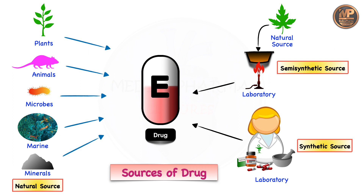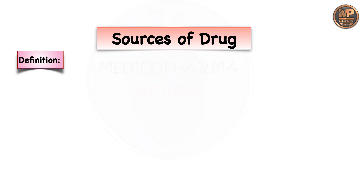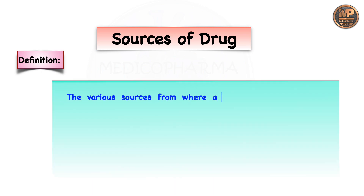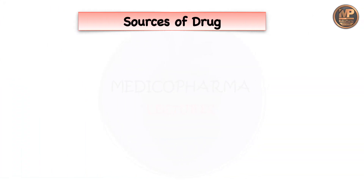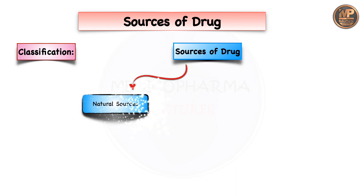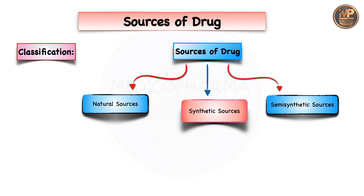These are all called sources of drug. If anything is missing, please mention it in the comment section. The various sources from where a drug can be obtained are collectively called sources of drug. The first class is natural sources obtained from nature, the second is synthetic sources obtained from the laboratory, and the third is semi-synthetic sources obtained from natural sources and modified in the laboratory.